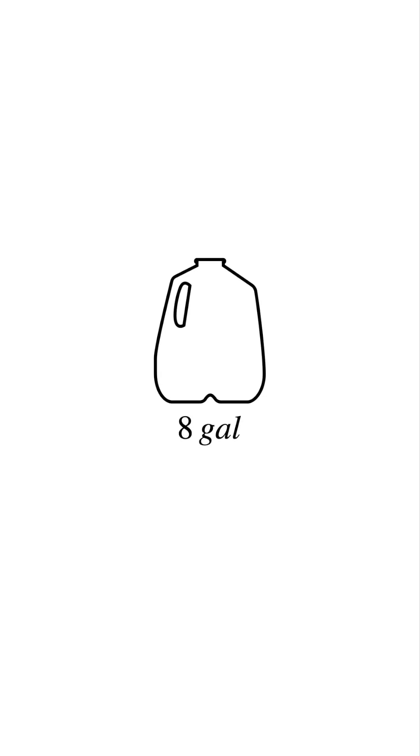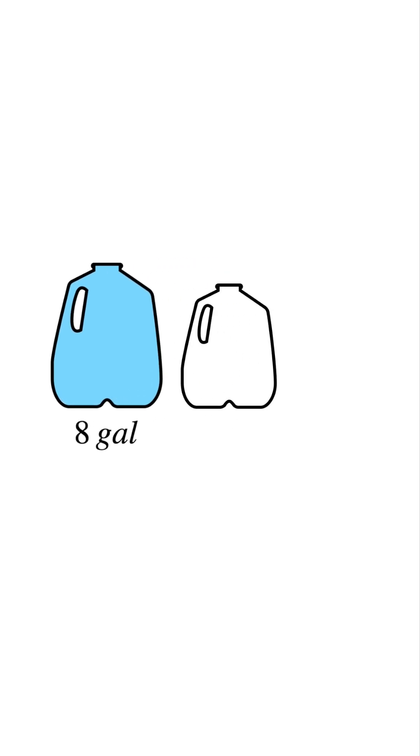Imagine you have an 8-gallon jug filled with water. Next to it are two empty jugs. One holds 5 gallons and the other holds 3. Your goal is simple. Measure exactly 4 gallons. No markings, no guessing, only pouring.